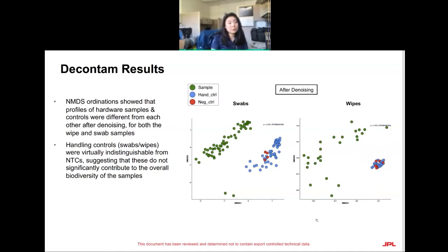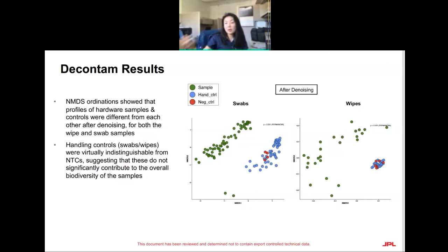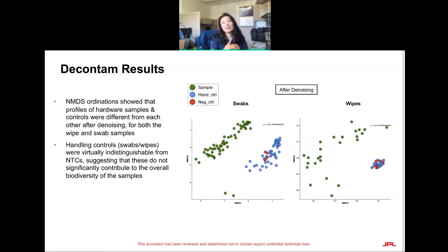It was important to remove this contamination because if we apply this for developing requirements for hardware contamination, it's very time consuming and resource intensive to tell engineers that an assembled part is too dirty — take it apart, re-clean, and re-sample. We could be looking at schedule delays of weeks. So we want to make sure that any contamination we're identifying is something we're confident in before telling them this is a concerning organism that needs to be cleaned.